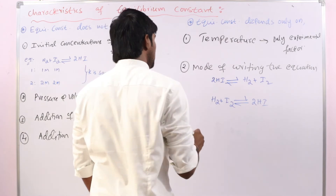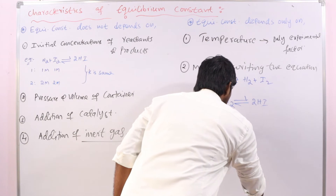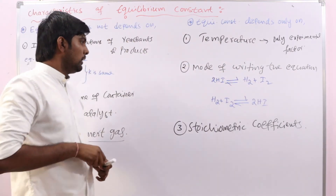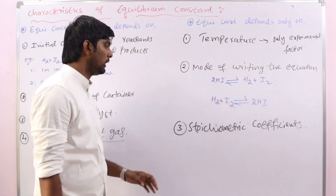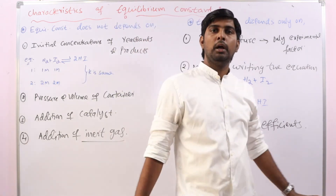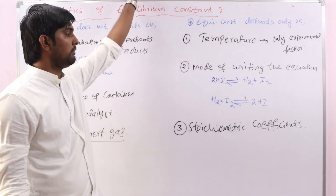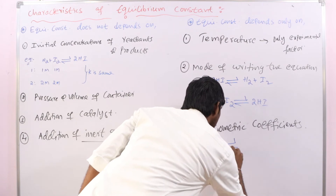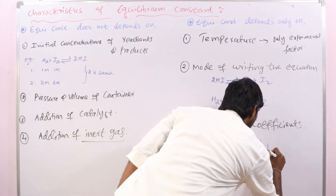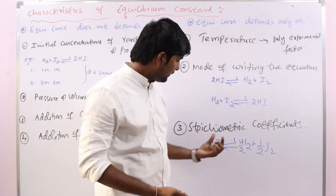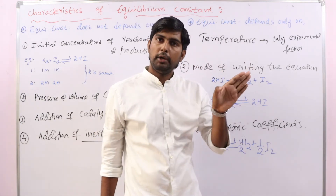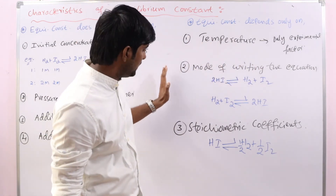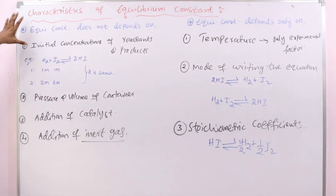Another factor is stoichiometric coefficients. For example, the reaction can be written as: 1 mole of HI → ½ mole of H₂ + ½ mole of I₂. For this reaction, the equilibrium constant is different. In both cases — same reactants, same products — but the stoichiometric coefficients are different. If stoichiometric coefficients change, the K value also changes. How they change, that we discuss in the next class.